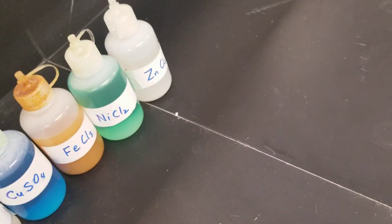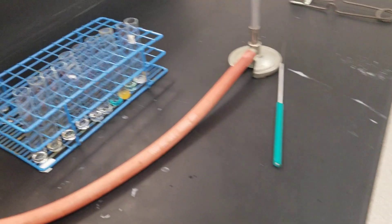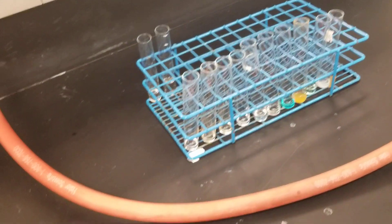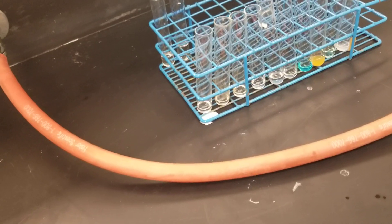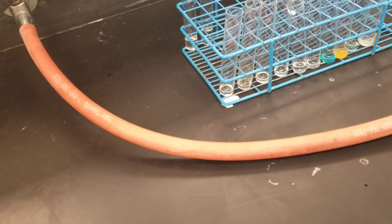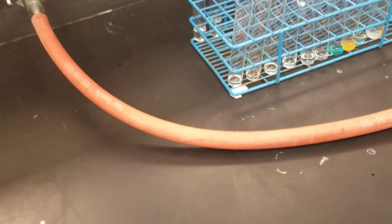First, we will do the testing of the metal and halide with all the known and unknown solutions. Then, with the help of the results from the known metal halide solutions, we can identify the metal and halide in the unknown solution.